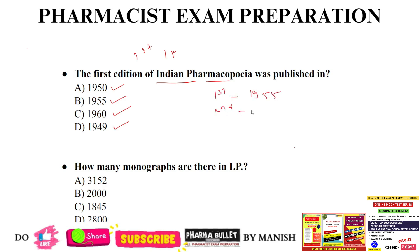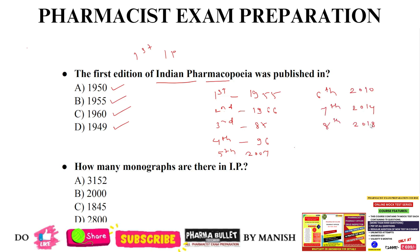The second edition was 1966, third 1985, fourth 1996, fifth edition 2007, sixth edition 2010, seventh 2014, eighth edition 2018, then ninth edition 2022 — this is the latest IP edition. So the answer to question 1, first edition of IP was published in 1955, option B is the correct answer.